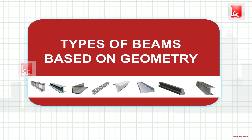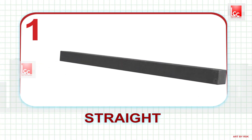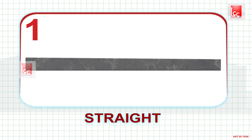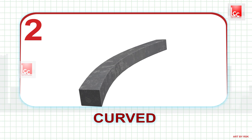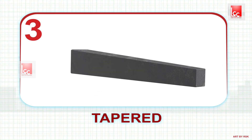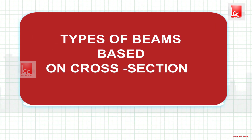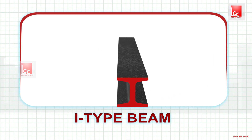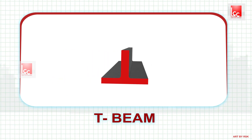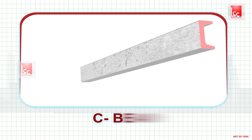Now let us know the different types of beams. On the basis of geometry, beams are of three types: straight, curved, and tapered. On the basis of cross section, beams are classified as I-type beam, T-type beam, and C-type beam.